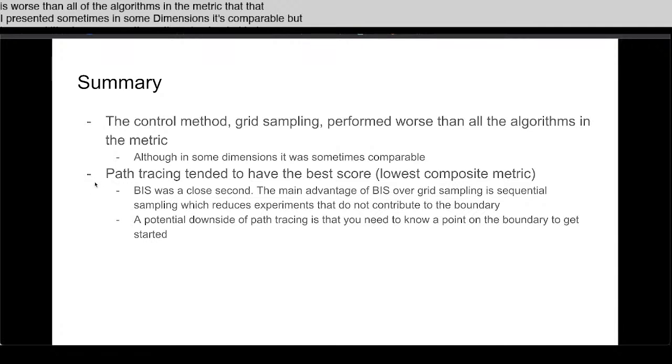The path tracing tended to have the best score, that is the lowest composite metric. BIS was a close second and the main advantage over BIS, this Broad Initial Sampling, is that we do sequential sampling so we don't do all 100 at once. We do a small number and then refine and then refine, and that ends up being less than doing all of them at once.